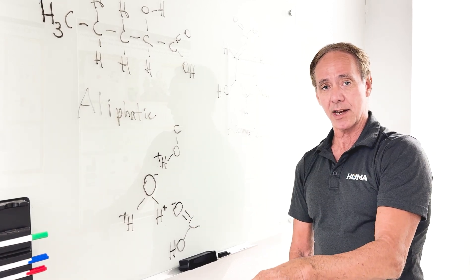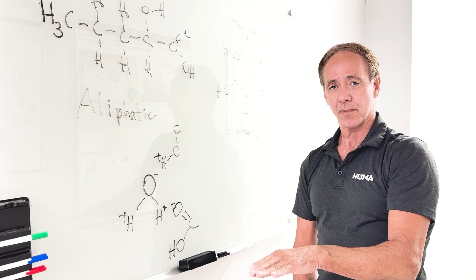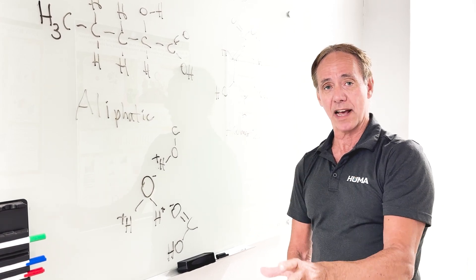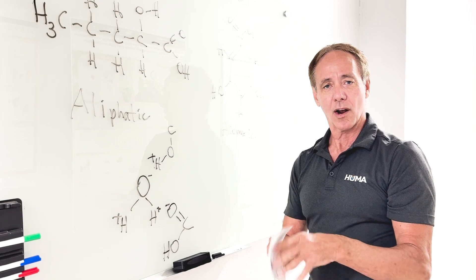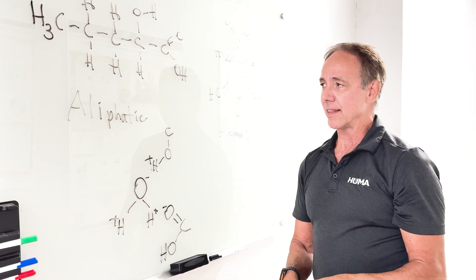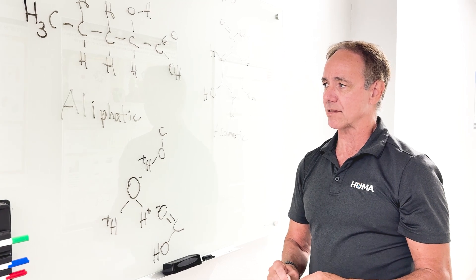Thus, when we drop the pH, we make it more acidic. The humic molecules will drop out of solution and start to coalesce or precipitate. And that's basically the difference between humic and fulvic acids.